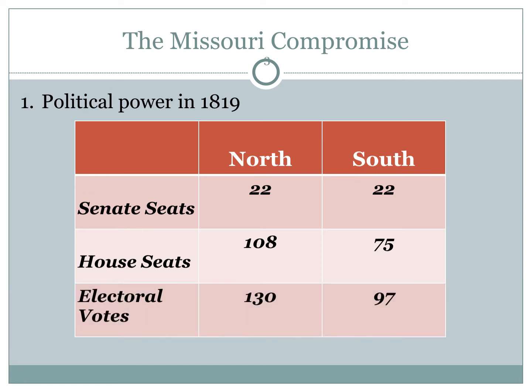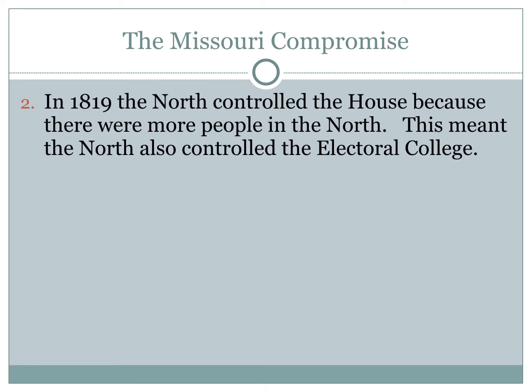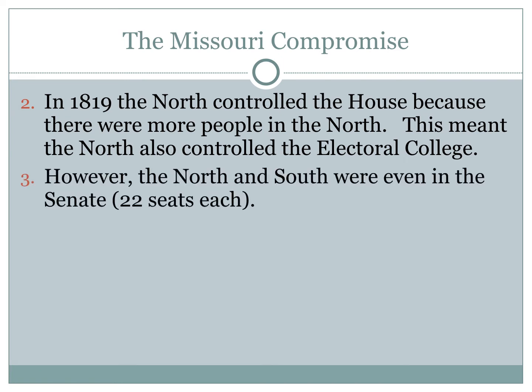There were also more electoral votes in the Northern states — 130 — than in the South — 97. Because electoral votes equal your Senate seats plus your House seats. So in 1819, the North controlled the House of Representatives because of its larger population, and it also controlled the Electoral College. However, the North and South were evenly split in the Senate with 22 seats each.